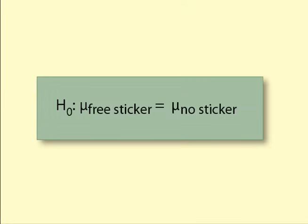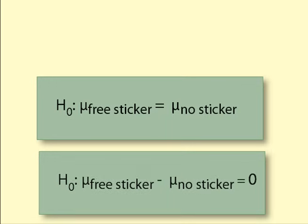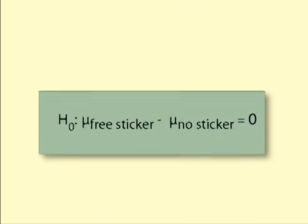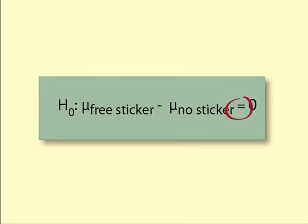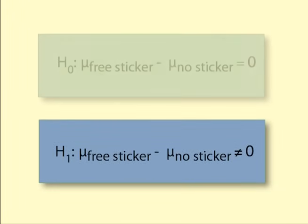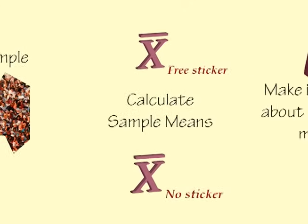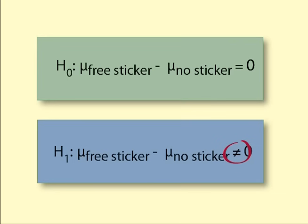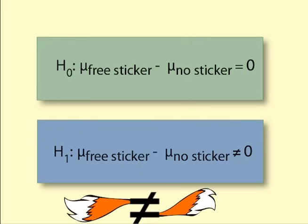Written mathematically, it looks like this. H0: mu(free sticker) = mu(no sticker), which rearranges to H0: mu(free sticker) − mu(no sticker) = 0. Note that there is an equals sign in the null hypothesis. The alternative hypothesis looks like this: H1: mu(free sticker) ≠ mu(no sticker). We do not know the values of the population means, but we will use information from the sample to get sample means, which will then help us make inferences about the population means and the difference between them. There is a not-equal-to sign in the alternative hypothesis, meaning we are interested in differences from zero in both directions. This is called a two-tailed test or exploratory hypothesis.